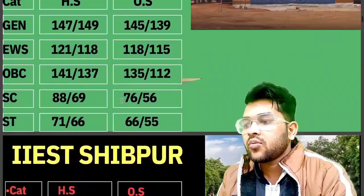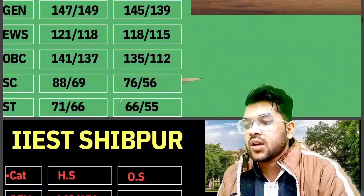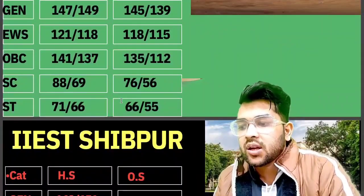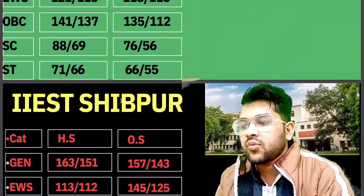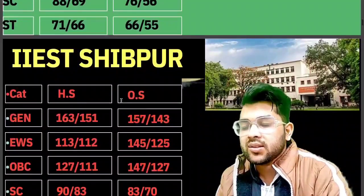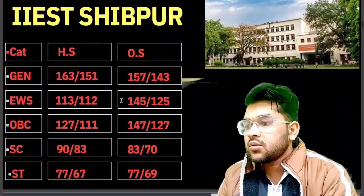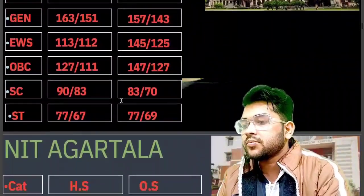For IIEST C4, here is the information: general 157, EWS 145, OBC 147, SC 83, ST 77.